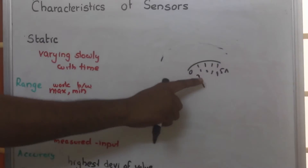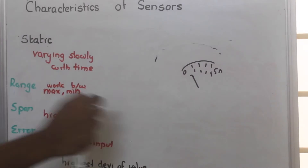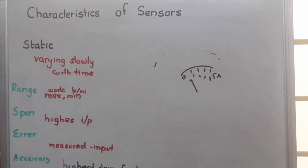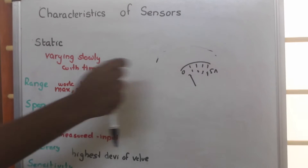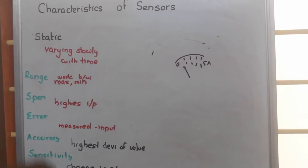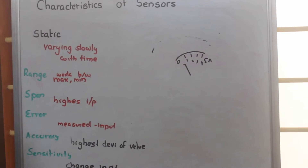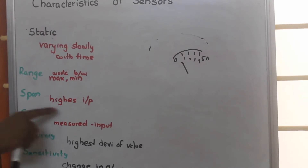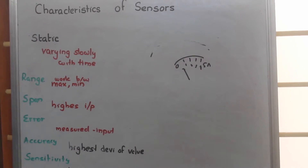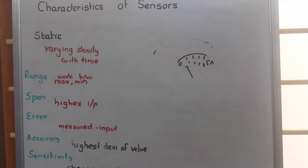Span. Span means here we are able to measure up to 5 ampere. So that 5 ampere is the maximum value that we are able to measure — that is the highest input. That is what we call as span.